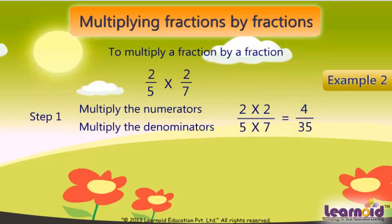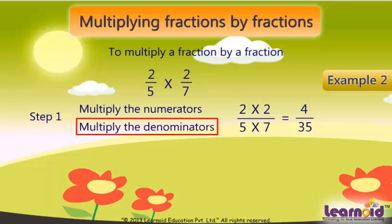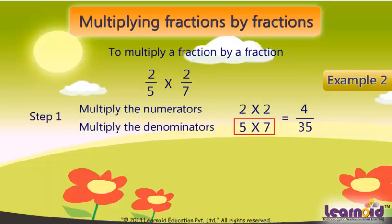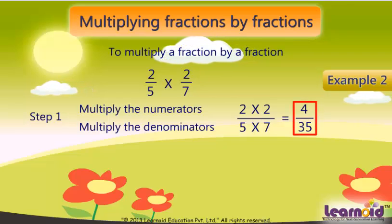And then multiply the denominators, 5 and 7, which is equal to 35. We got 4/35.